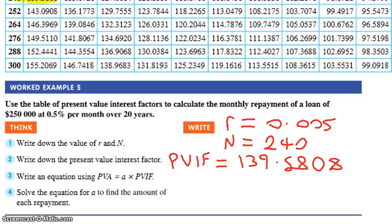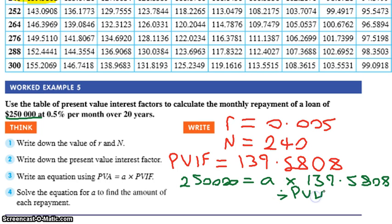Now what do I do? We're going to do some algebra. Times it by 250,000. Close, but no cigar. Divide it by... PVA is my 250,000. Yeah. So I get 250,000 equals A times 139.5808. Then what? Divide it. Excellent. Divide by. I'm just going to go PVIF because I'm lazy. And I'll go divide by PVIF because I'm lazy.